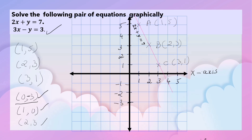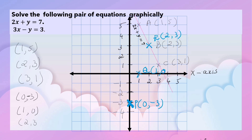Now let us plot the points for equation 3x minus y equals 3. The point 0 comma negative 3 — let this point be P. Now let us plot the point 1 comma 0. Let this point be Q, 1 comma 0. Now let us plot the point 2 comma 3. Let this point be R, 2 comma 3. Now let us join the points P, Q, R.